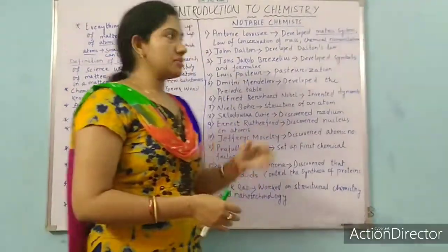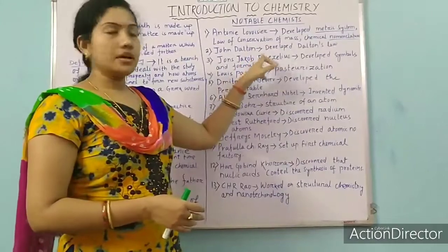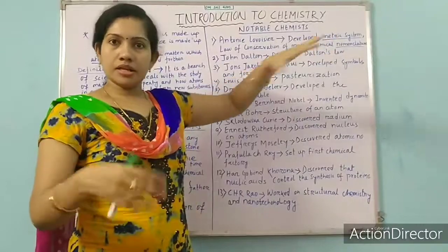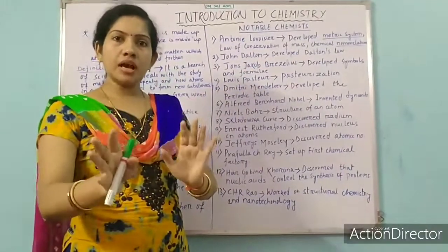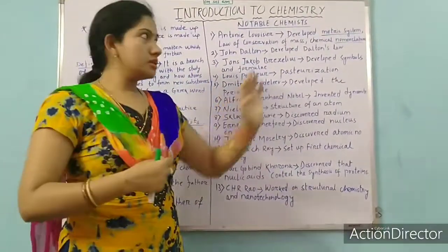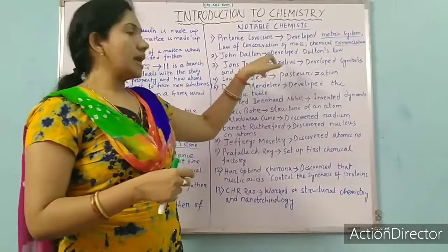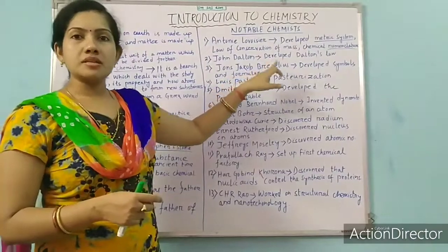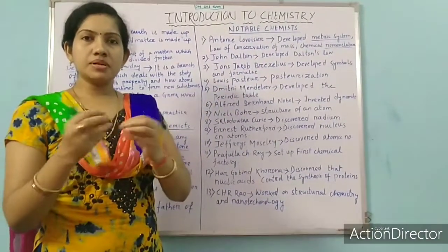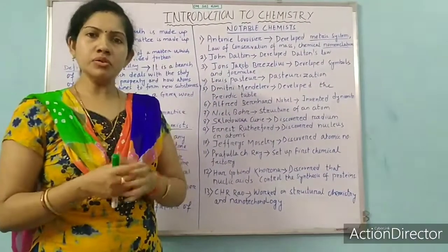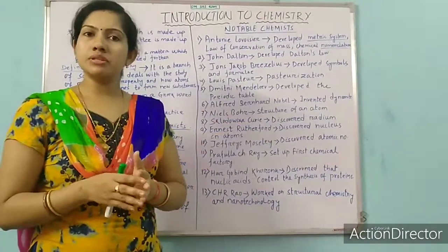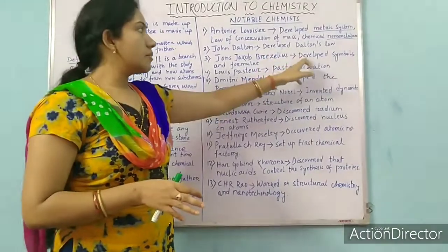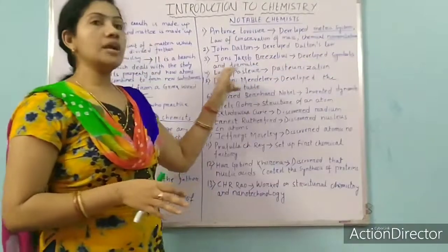Now the second: John Dalton — he developed Dalton's law, which you will read in a higher class. Third, John Jacob Berzelius — these names are a little bit hard and confusing, but gradually while reading you will get acquainted with them. John Jacob Berzelius developed symbols and formulas.